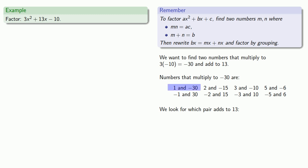So we could try our first pair, 1 and -30, and see if it adds to 13. Nope. We'll take a look at another pair, 2 and -15. Nope.